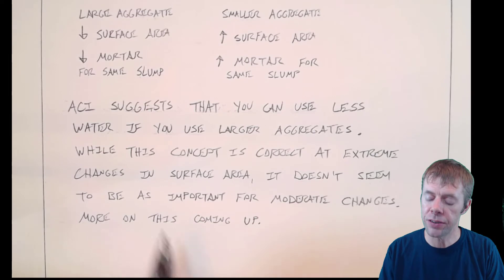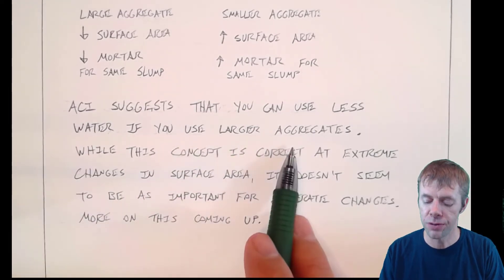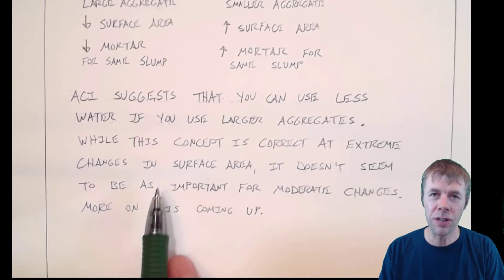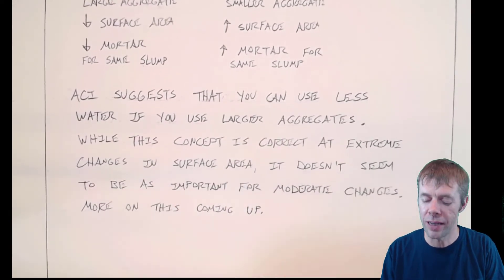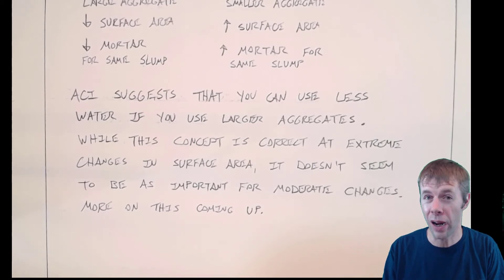So they think that if there's more aggregates to float that you're going to need more mortar. This means that ACI suggests that you can use less water if you use larger aggregates. Well this concept is correct in extreme cases. It doesn't seem to be that important for moderate changes in surface area. We'll talk more about this coming up.